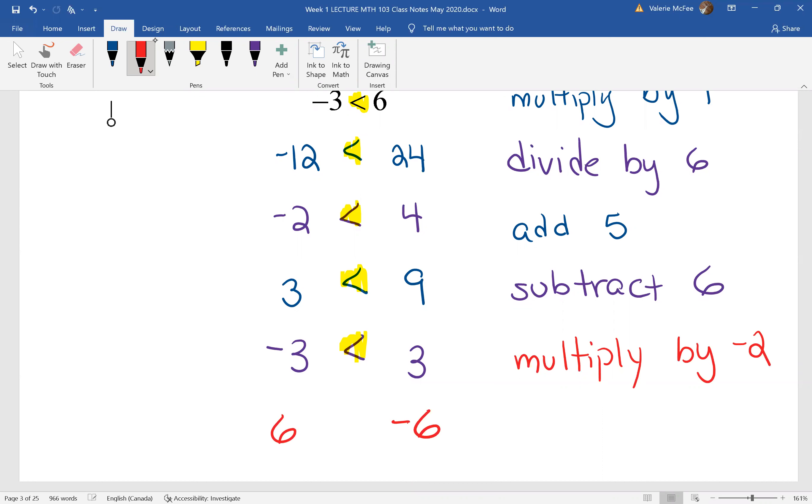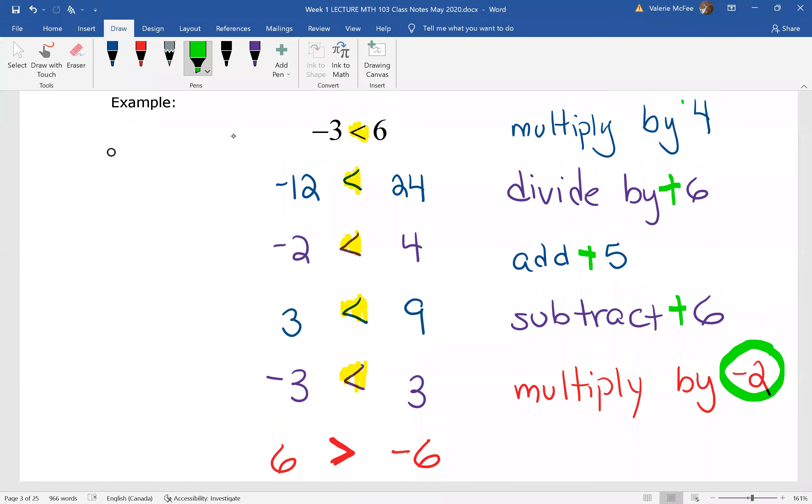What do you notice? The sign changed direction. I was multiplying by negative two. Every time I did an operation before, I was using a positive number.